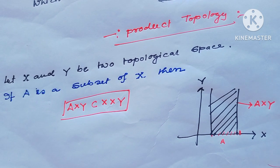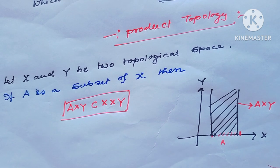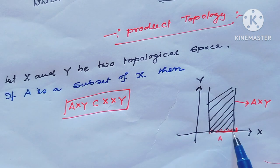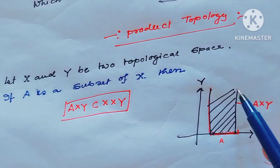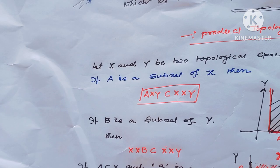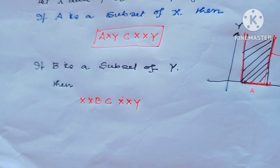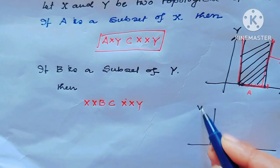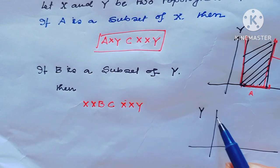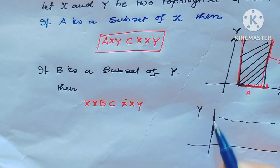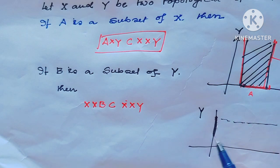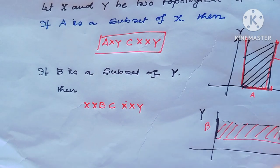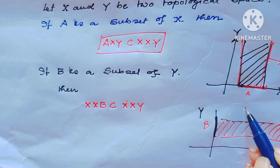If A is a subset of X, then A cross Y is a subset of X cross Y. If this is the set A, then A cross Y would be of such type. Similarly, if B is a subset of Y, then X cross B is a subset of X cross Y. Consider this is X and this is Y. If this is the set B, then this is X cross B.